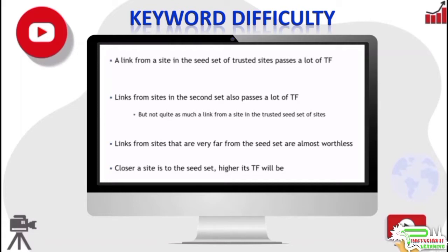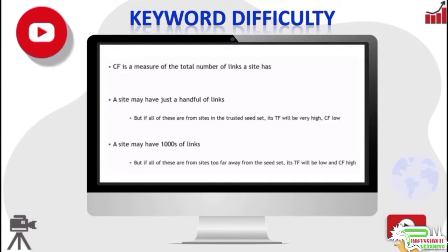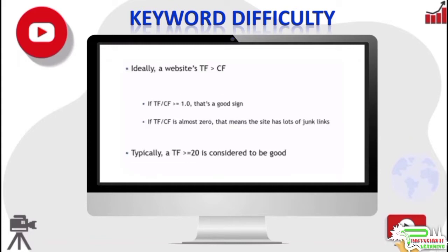Citation flow (CF) is a measure of the total number of links a site has. A site may have just a handful of links, but if all of these are from sites in the trusted seed set, the site's trust flow will be high. On the other hand, a site may have thousands of links, but if all of these are from sites too far away from the seed set, the trust flow will be very low while citation flow will be high. Ideally, a site's citation flow should be lower than its trust flow. If the ratio of trust flow to citation flow is one or greater, that's a good sign — it means at least some of the links are from highly trusted sites. But if the ratio is almost zero, it means the site has mostly junk links.